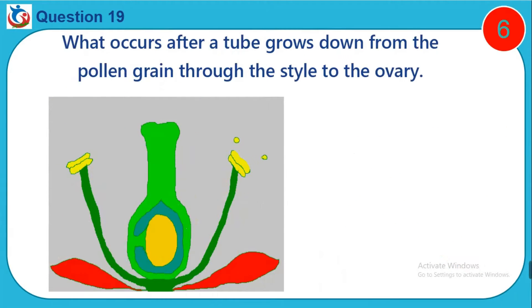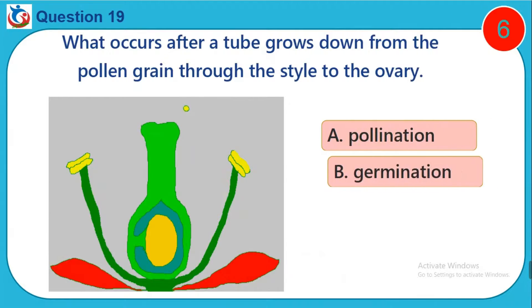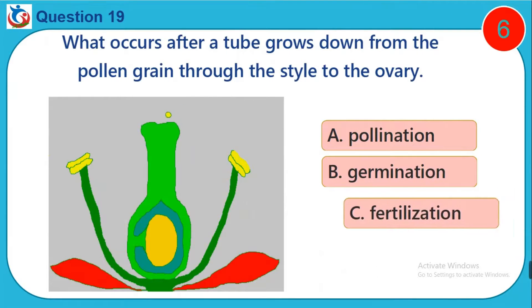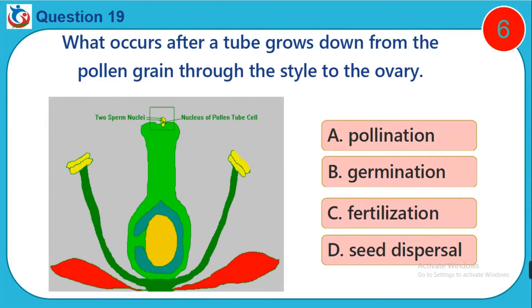Question 19. What occurs after a tube grows down from the pollen grain through the style to the ovary? A. Pollination. B. Germination. C. Fertilization. D. Seed dispersal.